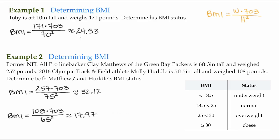What do these values mean? Here is a simplified version of a BMI chart that tells the status of height compared to weight. For Toby, he has a BMI of 24.53.